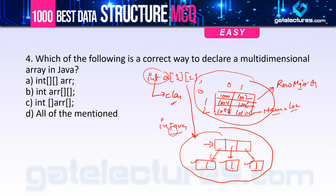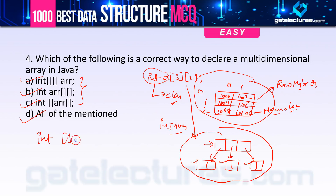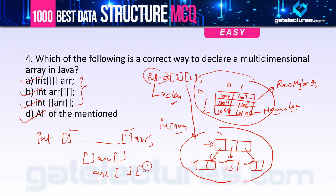For question 4, all three declaration options are correct in Java. You can place the square brackets with or without spaces, before or after the array name — for example, 'int[] arr', 'int [] arr', or 'int arr[]' — all are valid. So the answer is option D: all of the above.